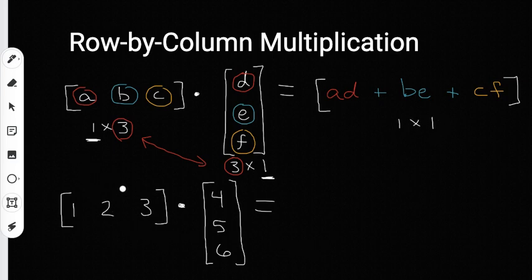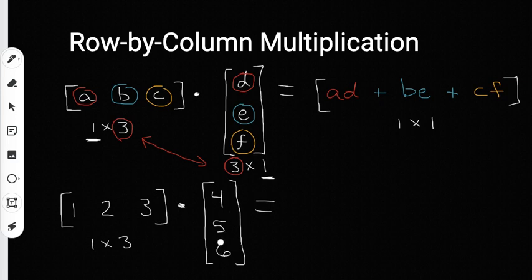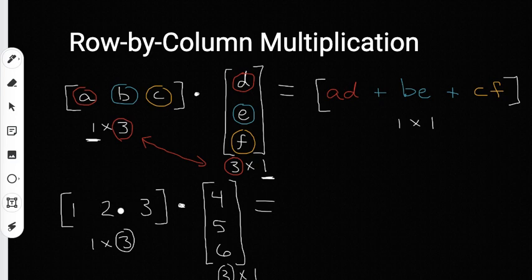Now let's move on to the next problem. I'm going to list out the dimensions of this row and this column. This matrix has one row but three columns, so this is going to be a 1 by 3. Over here this is a column matrix — it has three rows but one column, so this is going to be a 3 by 1. Notice the inside numbers match up, so now we can multiply this row by this column to get a 1 by 1 matrix.